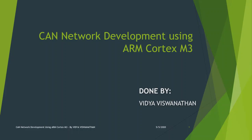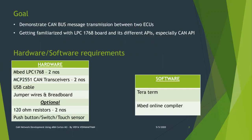Hello everyone. Today I am going to do a simple demonstration of CAN network development using an ARM Cortex M3 based microcontroller and CAN transceivers. The main goal of this project is to demonstrate CAN bus message transmission between two ECUs — a transmitter and a receiver. We also get familiarized with the LPC 1768 board and its different APIs, especially the CAN API.